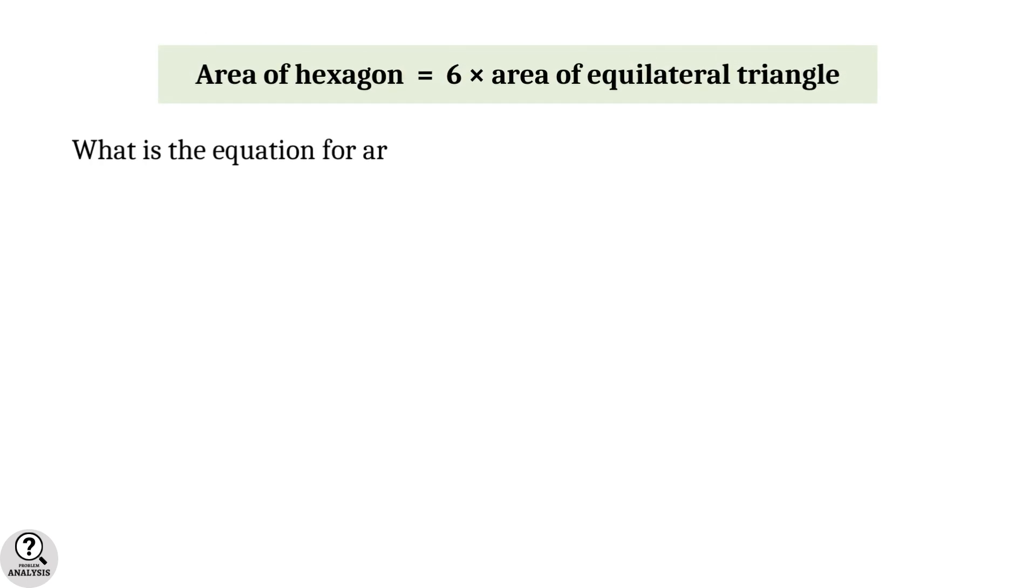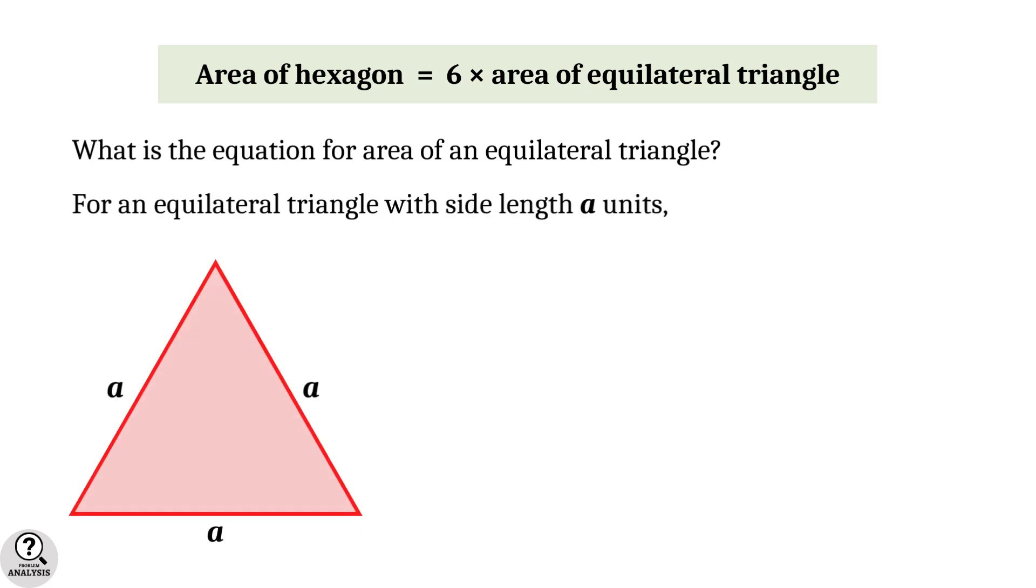Now what is the formula for finding the area of an equilateral triangle? For an equilateral triangle with the side length a units, the area equals √3/4 times a².